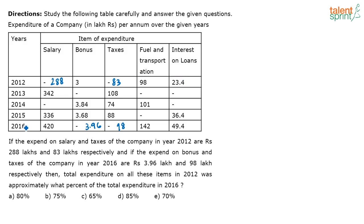For 2012: 288 plus 3 plus 83 plus 98 plus 23.4. Use split and merge — 288 plus 3 is 291. Then 291 plus 98: 291 plus 100 is 391, minus 2 is 389. Then 389 plus 83 plus 23.4. Adding 83 and 23.4 gives 106.4. Then 389 plus 106.4: 389 plus 100 is 489, plus 6.4 is 495.4.